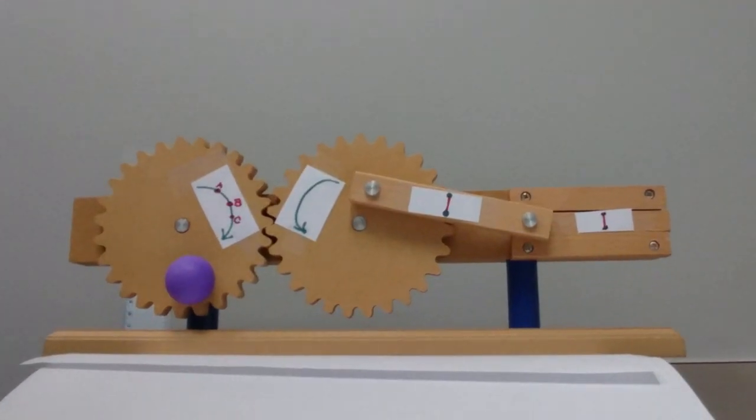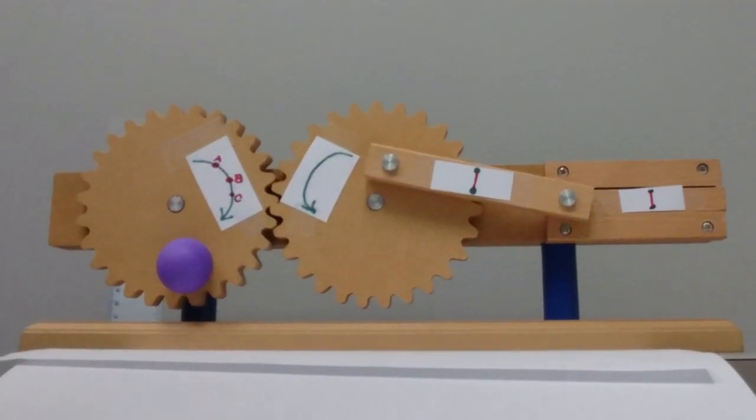Now let's talk about translation. The translation is a motion that doesn't have any rotation, so motion without any rotation. And there are two types of translations, one is rectilinear translation, and the next one is curvilinear translation.